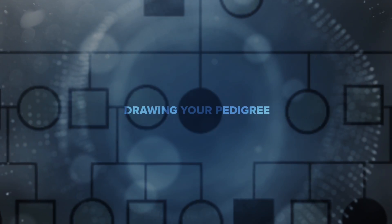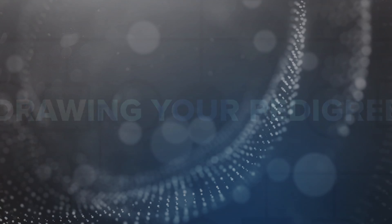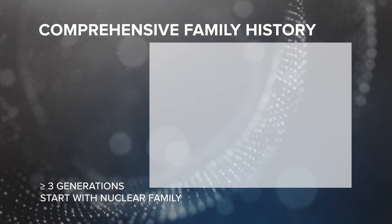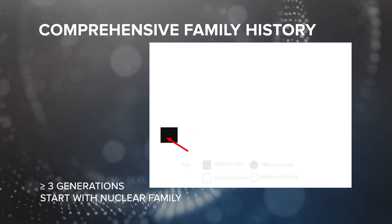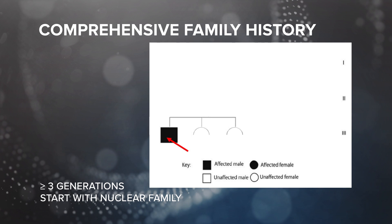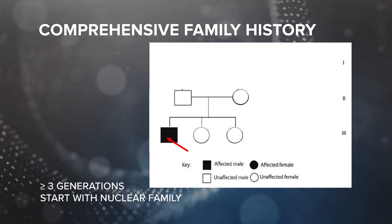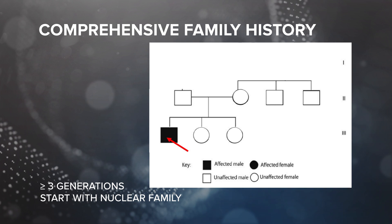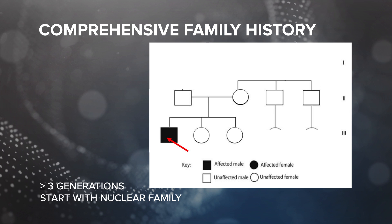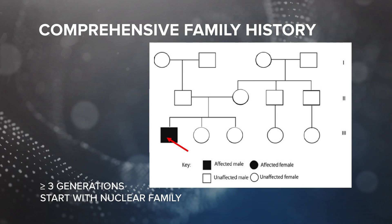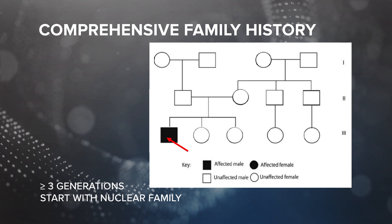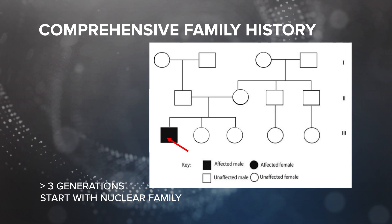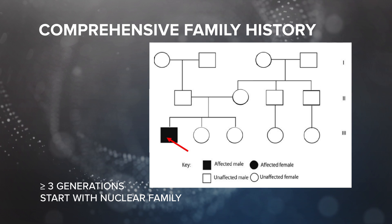Let's talk about where to begin with drawing your pedigree. A comprehensive family history includes at least three generations. For example, let's start with the patient, then his siblings. Next we can draw in their parents, any of their parents' siblings, who in this case are your patient's uncles. We can draw in any cousins, as well as your patient's grandparents. It may be easier to list out all the members of the nuclear family first, and then go back and ask about details of each one.